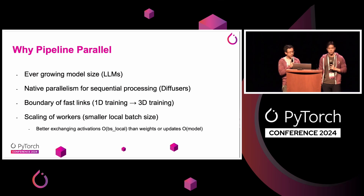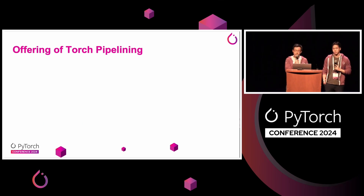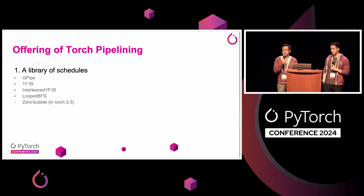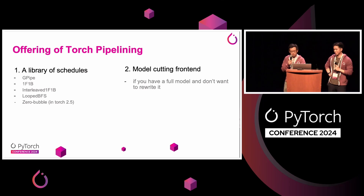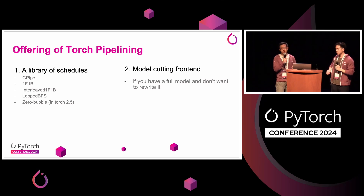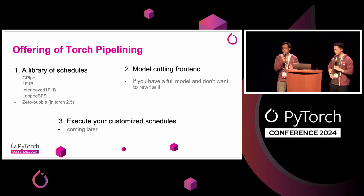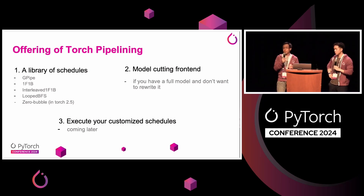So what does this new package in torch provide? First, we provide a rich library of schedules — for example, G-pipe, 1F1B, interleaved 1F1B. We also implemented some of the new schedules from literature, like loopy fast and zero bubble, and you can pick any of these and use them out of the box. Second, for your convenience, we also provide a model cutting front end, for the case where you have a full model but don't want to rewrite it into stages form. Lastly, a new feature coming later this year, we are opening up our stack so that we can accept your customized module representation and be your execution backend.